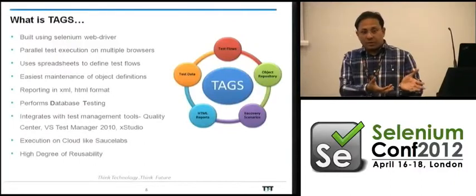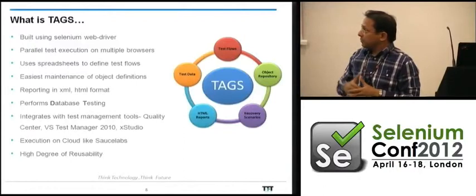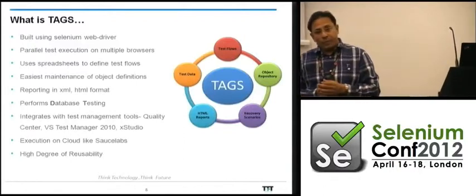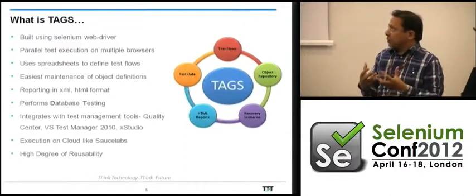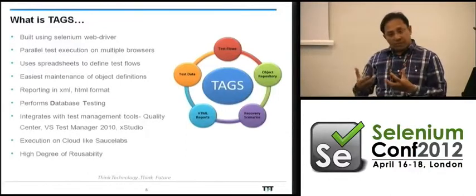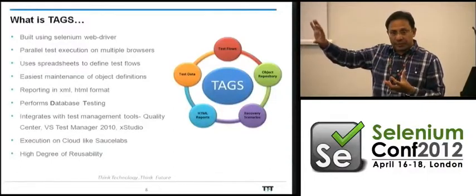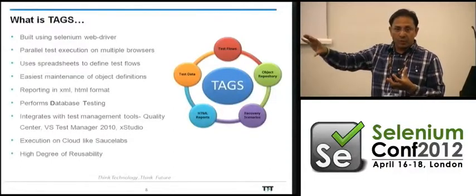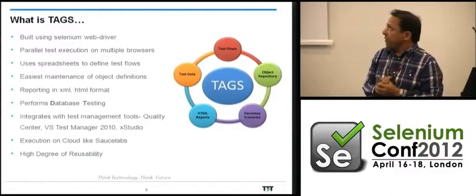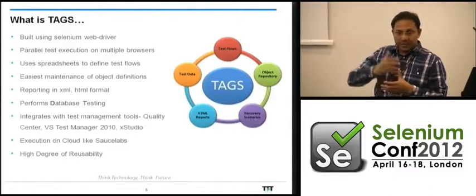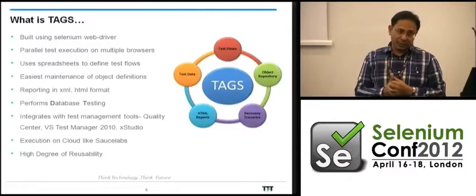Test cases are downloaded from the test case management tool. The TAGS engine takes over, performs each step action, and passes it to the relevant automation tool — Selenium goes to Selenium, QTP goes to QTP. It then gets the result back and stores it into the test case management tool.